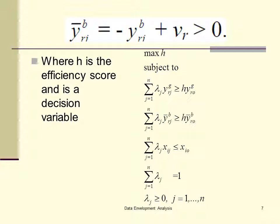That's why you see the convexity constraints in this particular model. So, if you use this type of linear transformation, you can only use the VRS model.